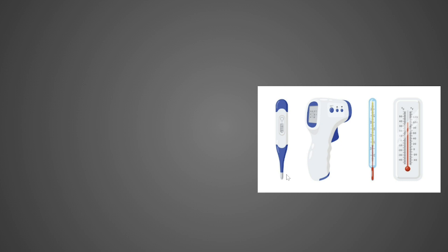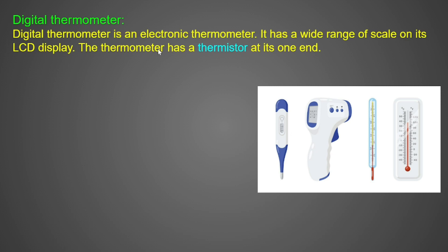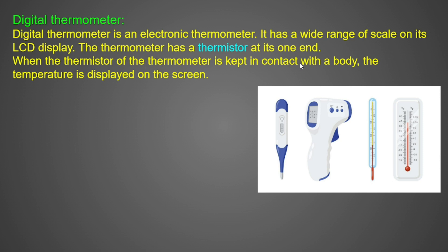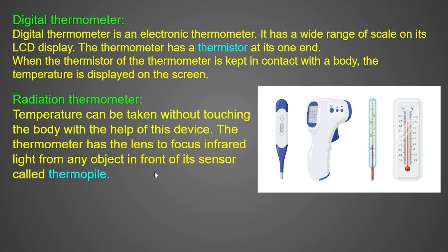Types of thermometers include: digital thermometer, radiation thermometer, clinical thermometer, laboratory thermometer, and thermistor. Thermopiles are sensors used in radiation thermometers — they detect temperature through radiation. The radiation thermometer is used to measure temperature without contact.